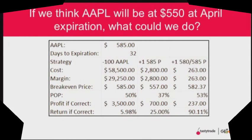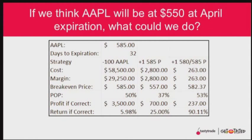Apple closed at $585. The day's expiration is $32. The first strategy would be selling 100 shares of Apple if you thought it was going from $585 down to $550. The cost of that would be $58,500. And the margin account would be half of that, $29,250.